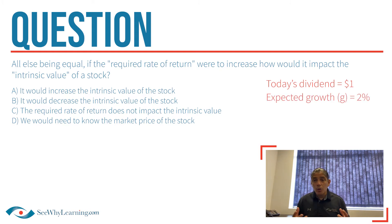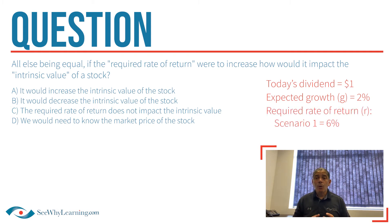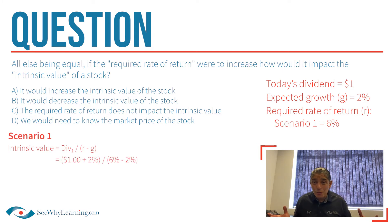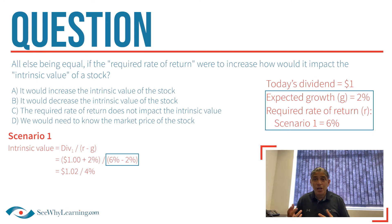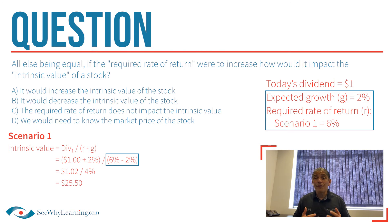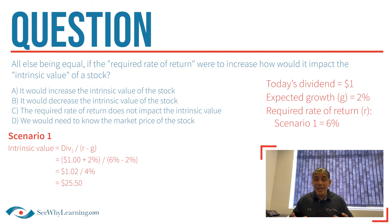Let's assume today's dividend is a dollar, expected to grow by two percent per year, and the required rate of return is six percent. The dividend one year from now would be $1.02. We divide $1.02 by four percent — which is the required rate of return of six percent minus the two percent growth rate — and we get an intrinsic value of $25.50.